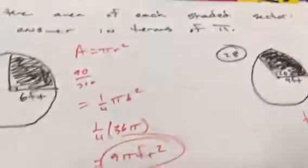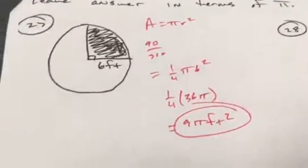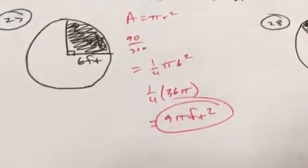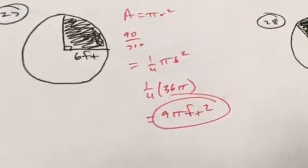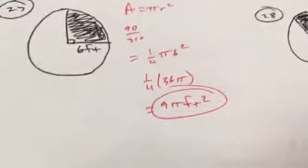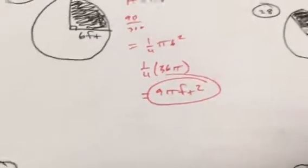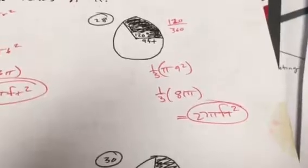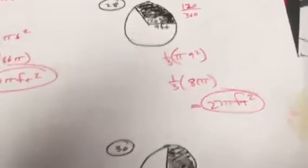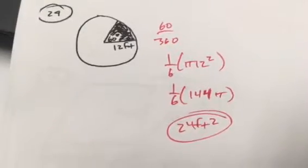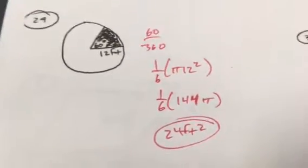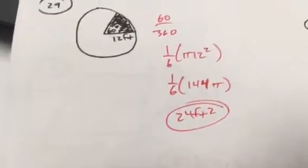Almost there, guys. Area of sector. Leave in terms of π. Area of a circle is πr². You're taking a fraction of the area. So 90 of 360 or a fourth of πr². A fourth of 36π is 9π square feet. There's the answer for 28. That's a third of 81π. 60 over 360 is a sixth of πr². So how about r? So if I tell you diameter tomorrow, make sure to cut it in half.